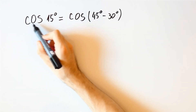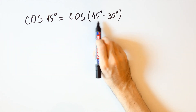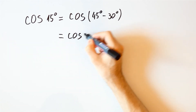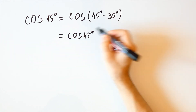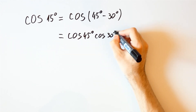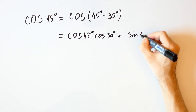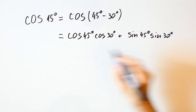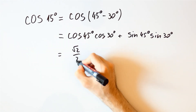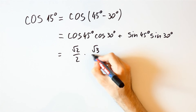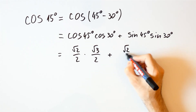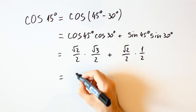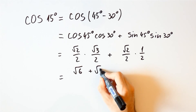If we go back to the cosine of 15 degrees, which is equal to the cosine of 45 degrees minus 30 degrees, we get that that is equal to the cosine of 45 degrees times the cosine of 30 degrees plus the sine of 45 degrees times the sine of 30 degrees. That is equal to the square root of 2 over 2 times the square root of 3 over 2, plus the square root of 2 over 2 times 1 over 2, and that is equal to the square root of 6 plus the square root of 2 over 4.